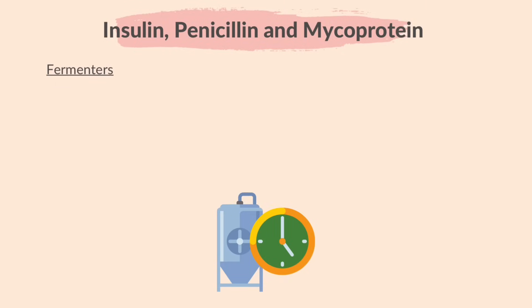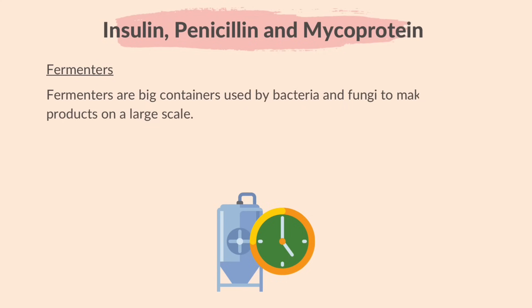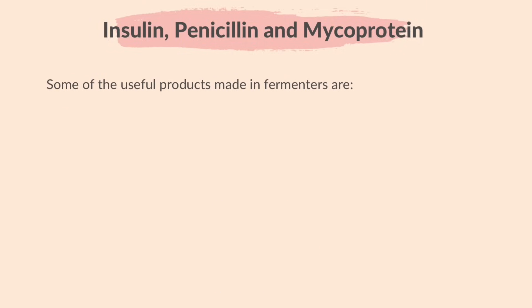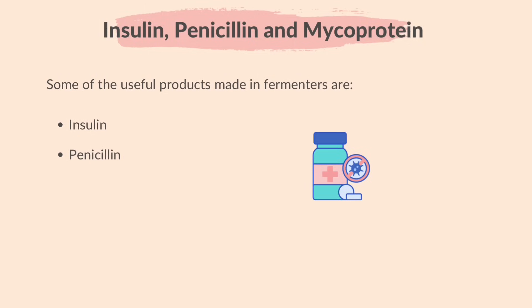Before we learn about the next three products of biotechnology, we need to understand what a fermenter is. Fermenters are big containers used by bacteria and fungi to make useful products on a large scale. Fermenters provide a controlled environment with the right conditions for these microorganisms to grow and make valuable products in large quantities. Some of the useful products made in fermenters are insulin, penicillin, and mycoprotein.